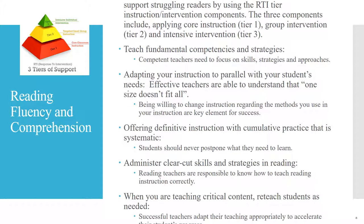Progress in the areas of reading fluency and comprehension requires thinking about the three tiers of support in order to help struggling students get the instruction and intervention that they may need. Listed are five components that are crucial in order to meet these students' needs, which help to determine the skills and strategies the student may need, monitor their progress, and adapt the instruction in order to help them be accessible as readers.